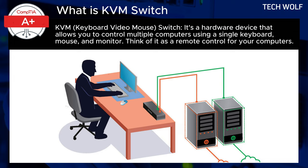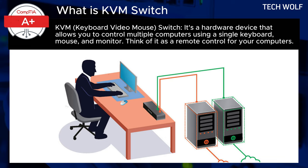Secondly, it increases efficiency, as switching between computers becomes much faster and easier. Thirdly, improved ergonomics — you can create a more ergonomic workspace by using a single set of peripherals. In essence, a KVM switch is a convenient and efficient way to manage multiple computers with a single set of peripherals: one keyboard, one mouse, and one monitor.